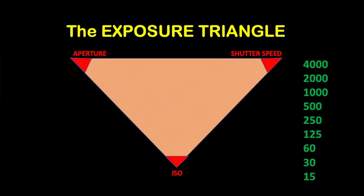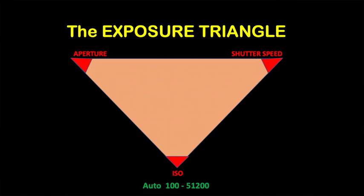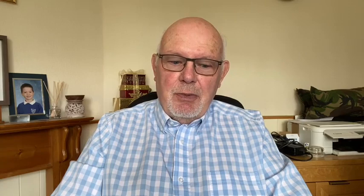ISO controls the sensitivity of the camera sensor. The lower the ISO number, the less sensitive the sensor is to light; the higher the ISO number, the more sensitive it becomes. These three elements work together to generate an exposure value. You can't always manipulate one setting without having a direct impact on one or both of the other elements of the exposure triangle.